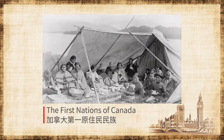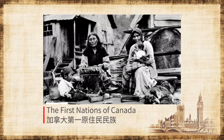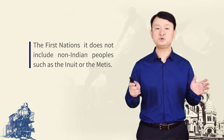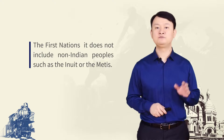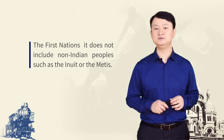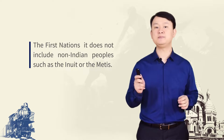They are called 'First' because they are the original inhabitants of the country, and 'Nations' because there is not one single group or culture — there are many nations, or tribes, which have different languages, customs and beliefs. The First Nations is not a comprehensive term for all Aboriginal peoples of Canada, and it doesn't include non-Indian peoples such as the Inuit or the Métis.